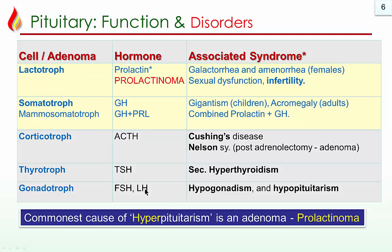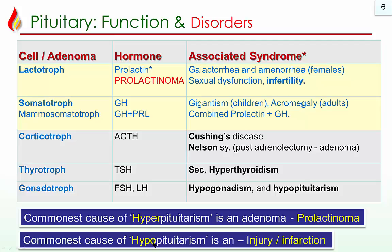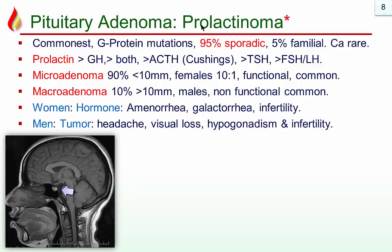The least common is the gonadotroph adenoma, accounting for about 1%. The commonest cause of hypopituitarism is destruction of the pituitary, usually due to injury, trauma, tumor, or infarction. Pituitary adenomas are due to G protein mutations. 95% of cases are sporadic and only 5% are familial. Carcinomas are very rare. Prolactin is the most commonly produced hormone and gonadotrophins are the least. Most adenomas are microadenomas — very small tumors that may calcify — accounting for 90% of cases.